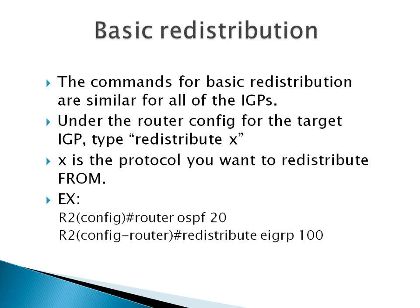The basic redistribution command is essentially the same regardless of which protocol you're redistributing to. The command is 'redistribute X' where X is the protocol you want to redistribute from. As an example, you'd go into 'router ospf 20' and type 'redistribute eigrp 100'. That's the basic syntax for OSPF.